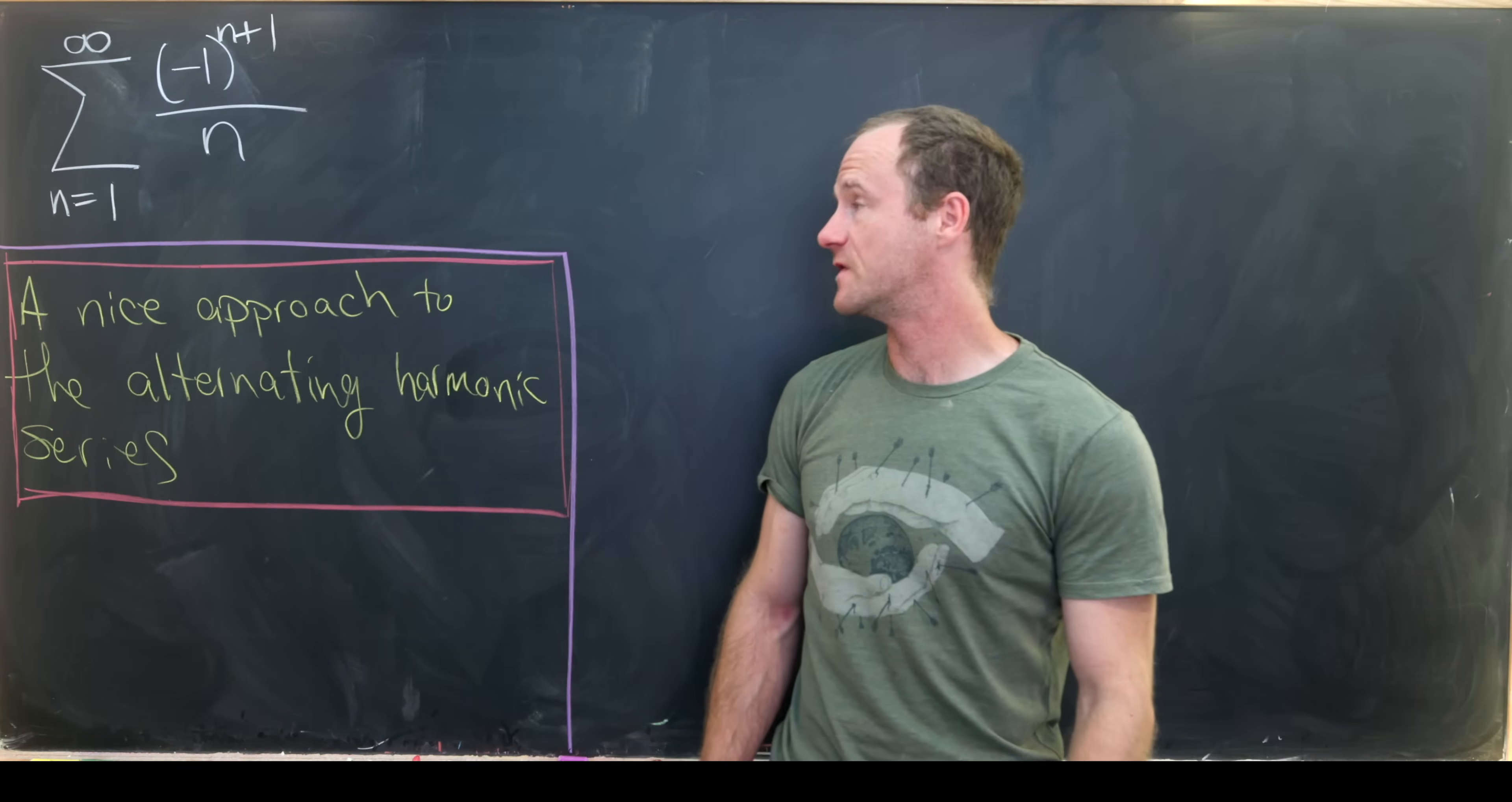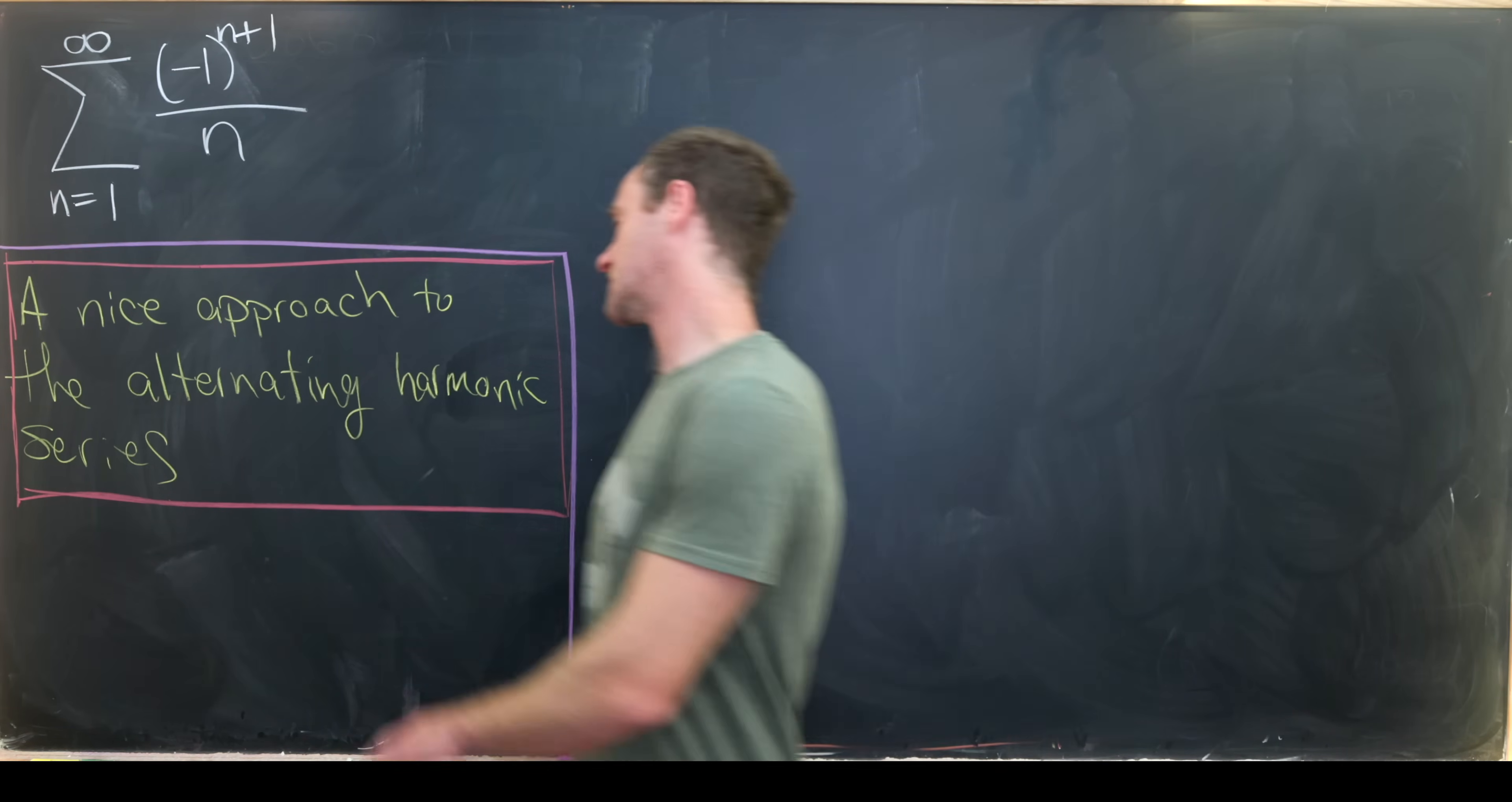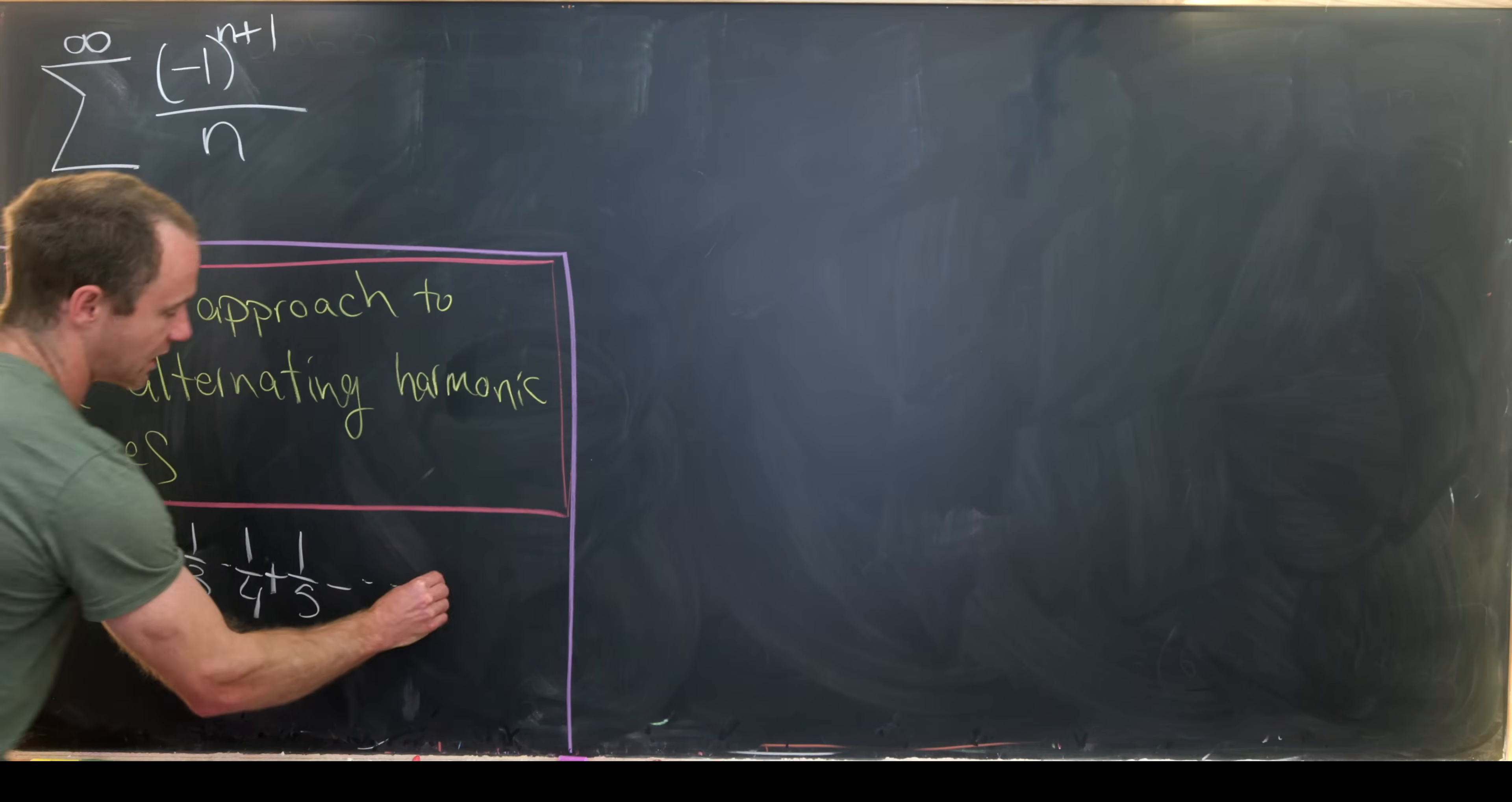Today we're going to find the value of the sum of the alternating harmonic series. So by the alternating harmonic series, I mean, the first few terms look like this: 1 minus 1/2 plus 1/3 minus 1/4 plus 1/5 and so on and so forth.